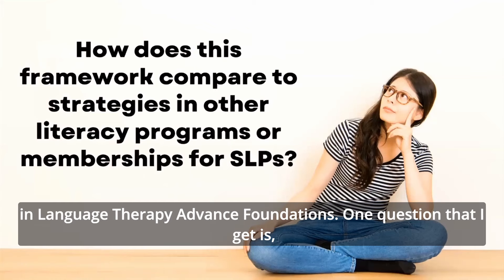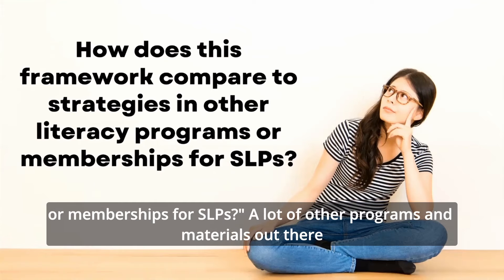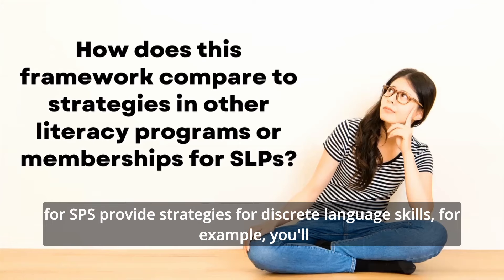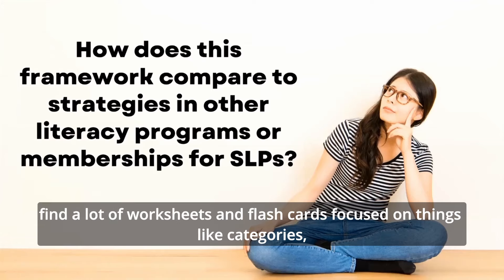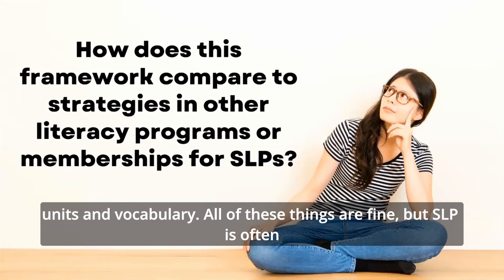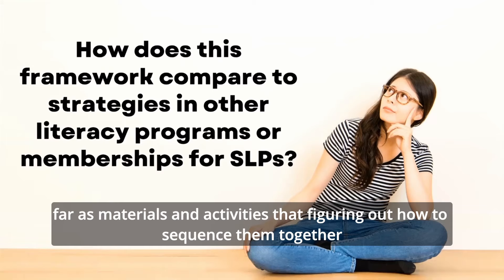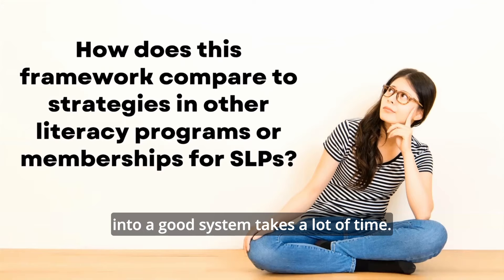One question I get is: how does the Essential 5 Framework compare to strategies in other literacy programs or memberships for SLPs? A lot of other programs and materials out there provide strategies for discrete language skills — for example, worksheets and flashcards focused on categories, verb tenses, or WH questions, and some that focus on thematic units and vocabulary. All of these things are fine, but SLPs often experience information overload. There are so many different options that figuring out how to sequence them into a good system takes a lot of time.